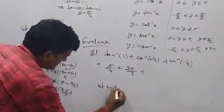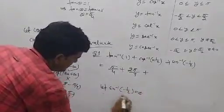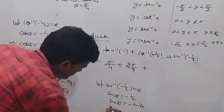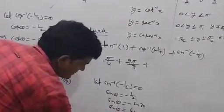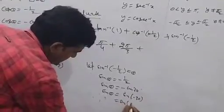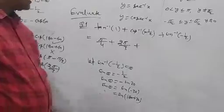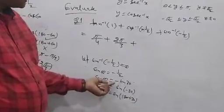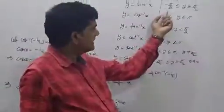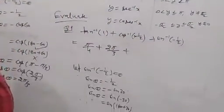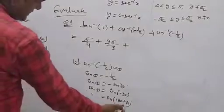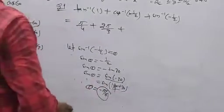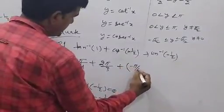Now let sin inverse of minus 1 by 2 equal theta. Then sin theta equals minus 1 by 2, which equals minus sin 30°. So sin theta equals sin(minus 30°). For sin inverse, the range is minus pi by 2 to pi by 2, so we take theta equals minus pi by 6. Note that 30 degrees equals pi by 6.